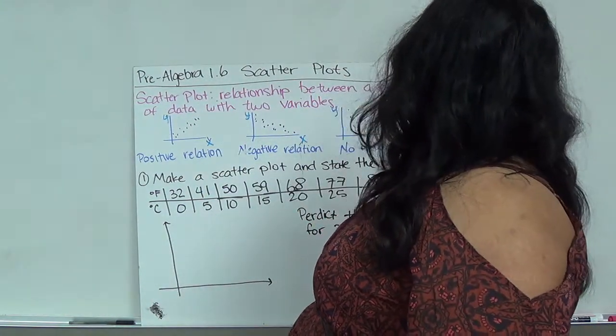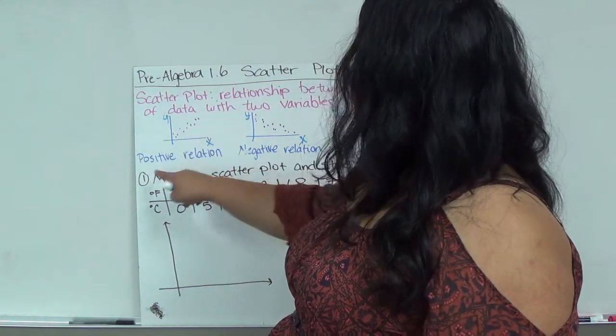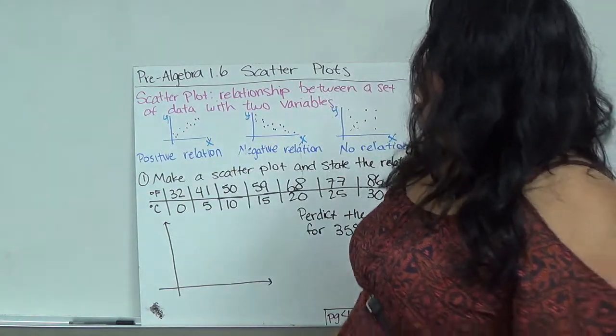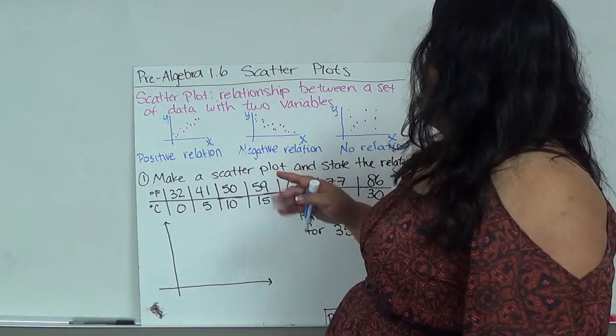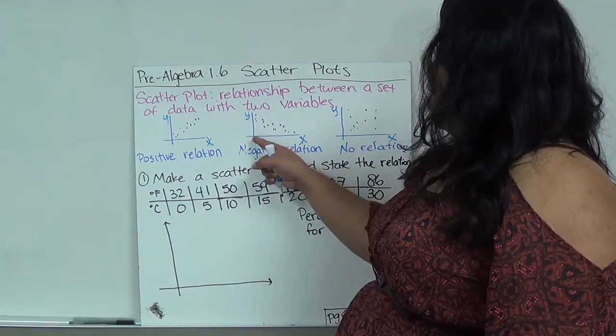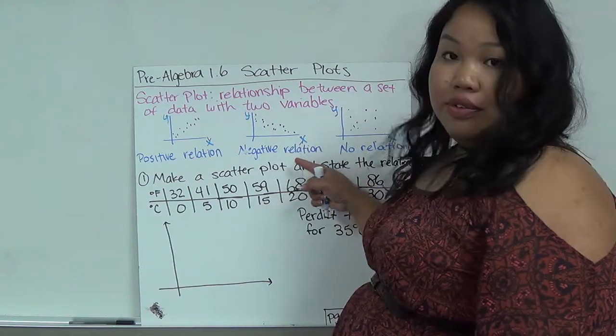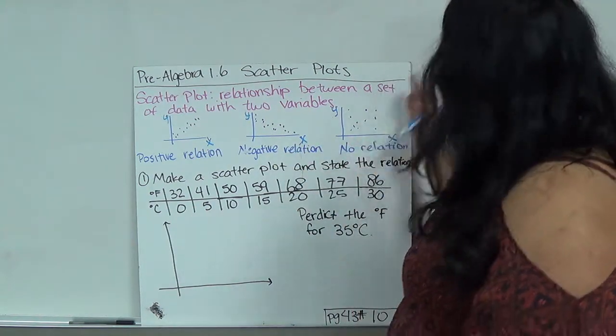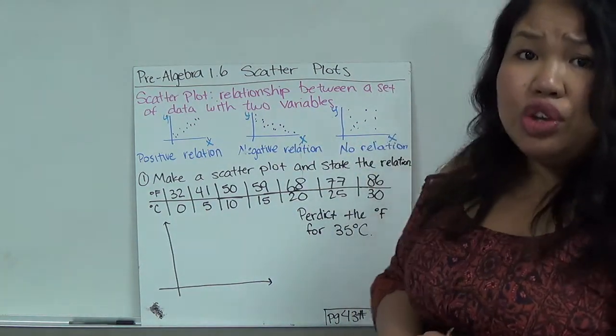So if you see as the x is increasing so is the y, this is called positive relationship. When the x gets bigger so does the y, the negative relationship is when the x gets bigger the y gets smaller. And then if it's just scattered everywhere you really can't tell, it's called no relation.